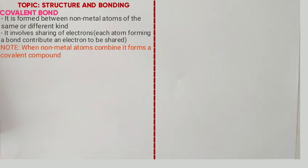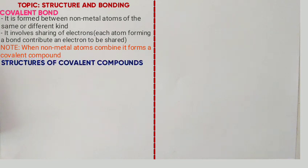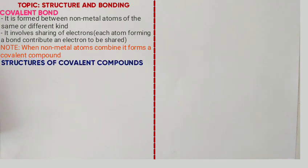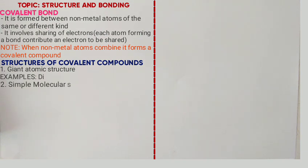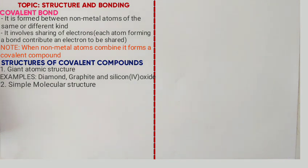When non-metals combine, they form what we call a covalent compound. This covalent compound can either have a giant atomic structure or a simple molecular structure. Compounds with giant atomic structure include silicon dioxide, graphite, and diamond. The rest of the covalent compounds will have simple molecular structure.